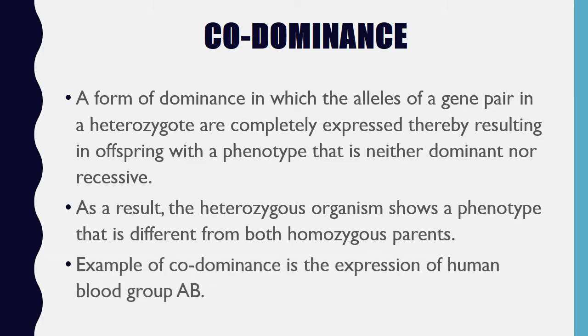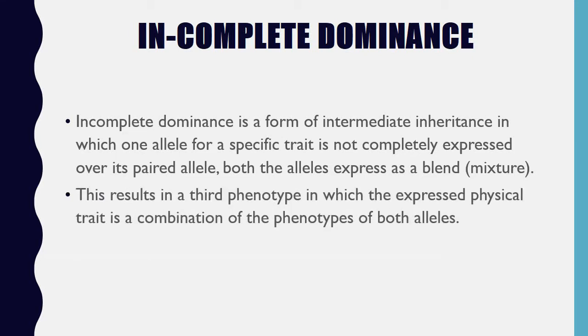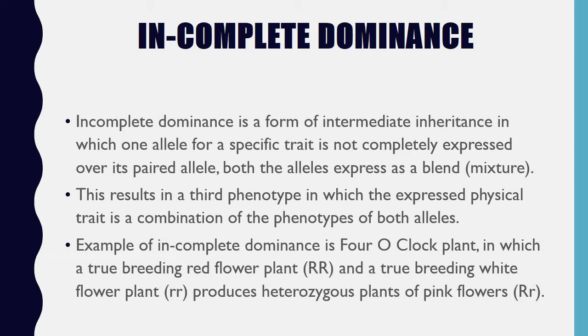An example of codominance is the expression of human blood group AB. Incomplete Dominance is a form of intermediate inheritance in which one allele for a specific trait is not completely expressed over its paired allele; both alleles express as a blend or mixture. This results in a third phenotype in which the expressed physical trait is a combination of the phenotypes of both alleles. An example of incomplete dominance is the 4 o'clock plant, in which a true breeding red flower plant (RR) and a true breeding white flower plant (rr) produces heterozygous plants with pink flowers (Rr).